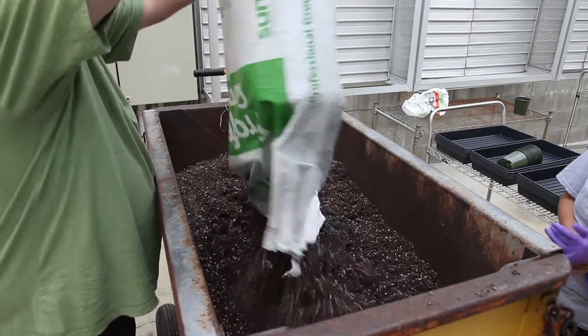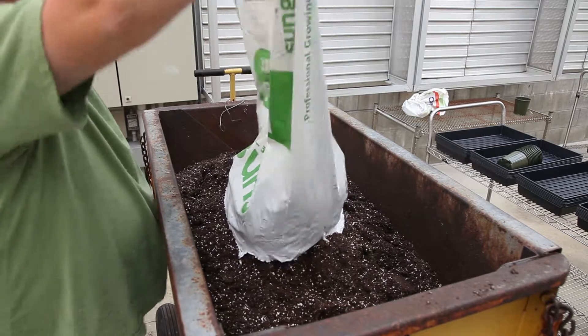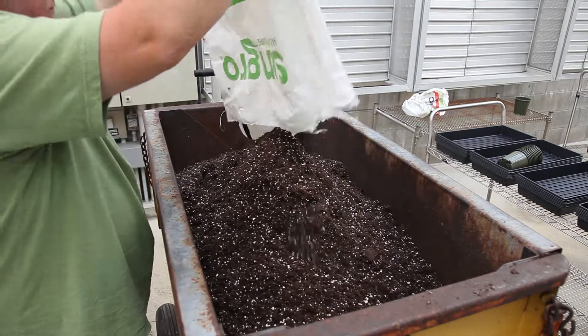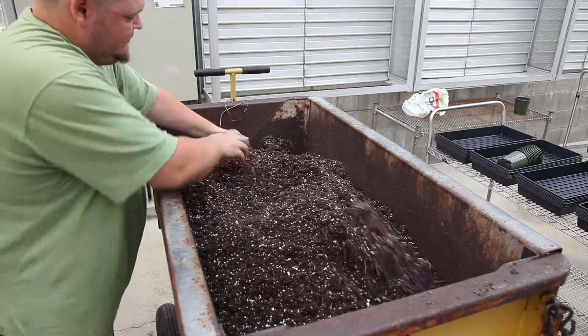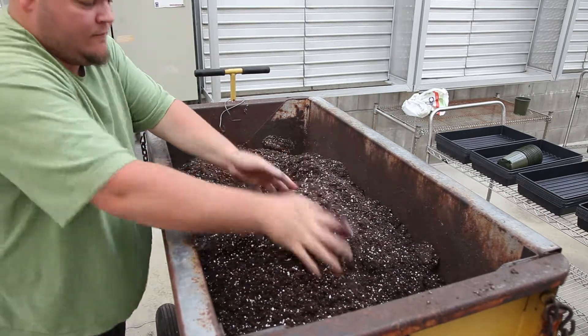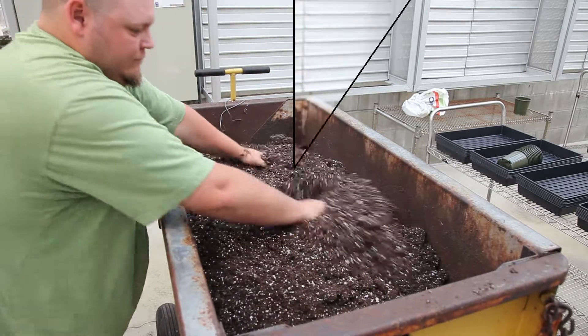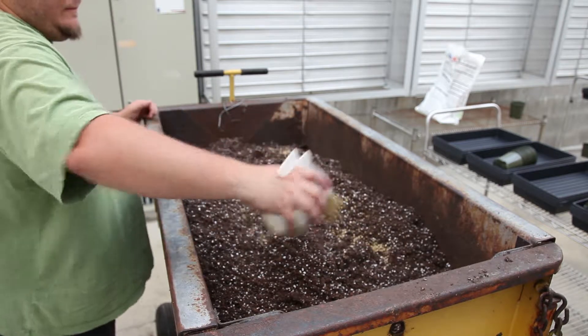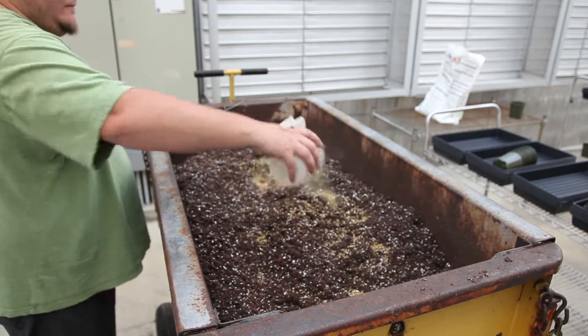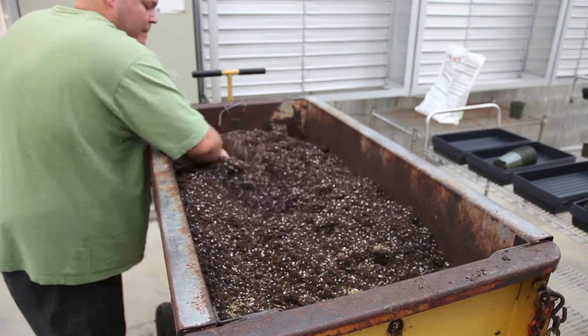Place soil in a clean container and break up any large clumps. Next, add 14-14-14 fertilizer, for example Osmocote, to the soil according to the ratio provided on the product label and mix thoroughly.